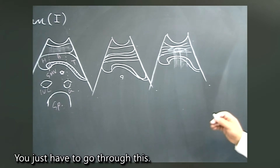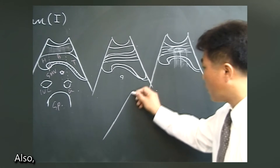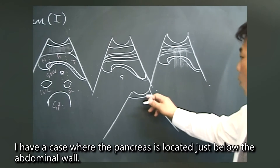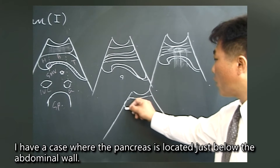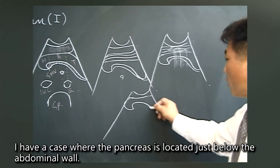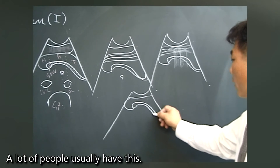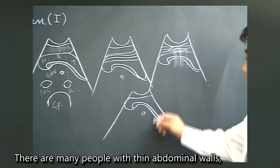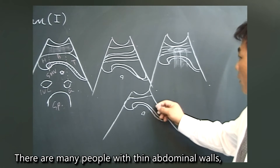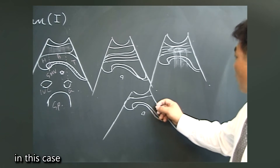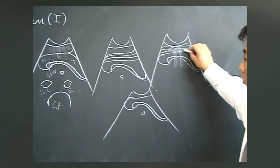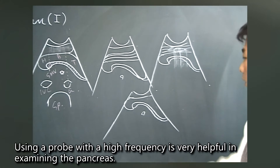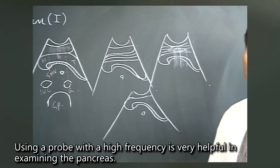You just have to work through this. Also, there are cases where the pancreas is located just below the abdominal wall. Many people with thin abdominal walls have this. In this case, using a probe with a high frequency is very helpful in examining the pancreas.